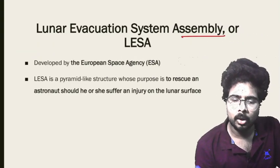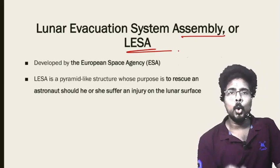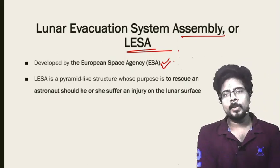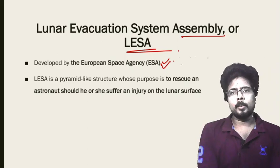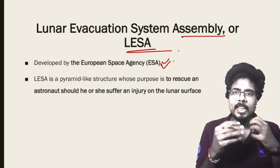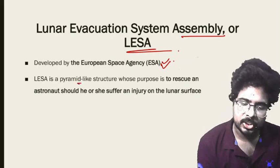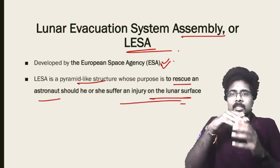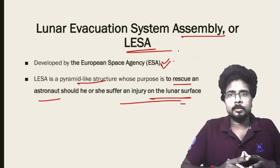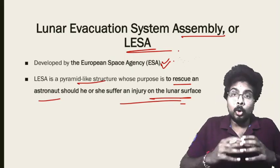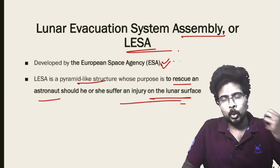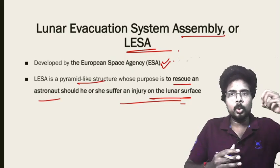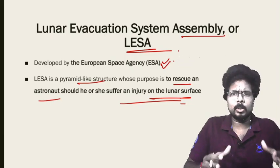Next: the Lunar Evacuation System Assembly, or LISA. It was developed by the European Space Agency (ESA). This was developed in order to rescue someone who fell ill or had any injury while on the Moon. It is a pyramid-like structure whose purpose is to rescue an astronaut who suffers an injury on the lunar surface. If someone suffers an injury on Earth we can treat them easily, but when people go on a mission to the Moon or any other body, we need to ensure their safety too.